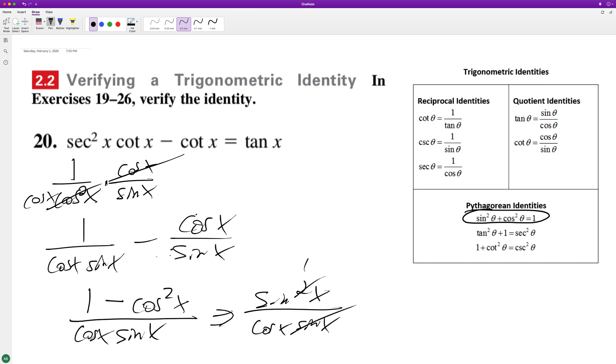Cancel one of these and we get sine x over cosine x, which equals tangent x.